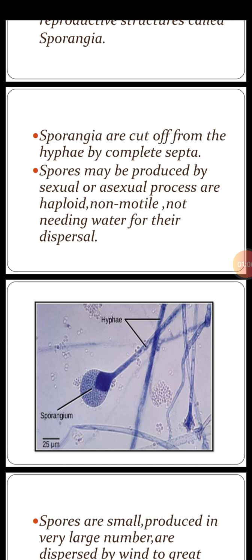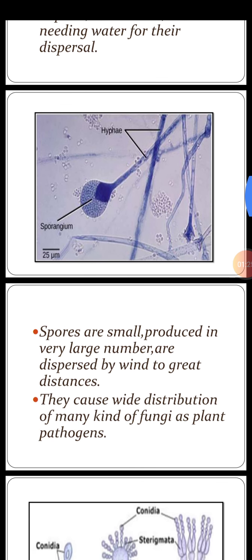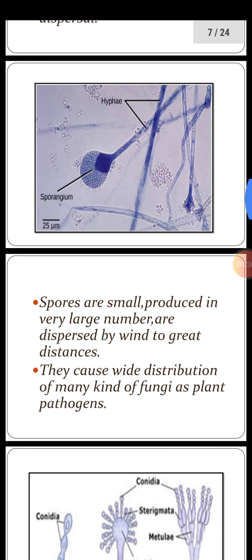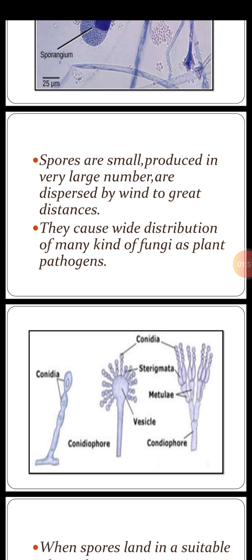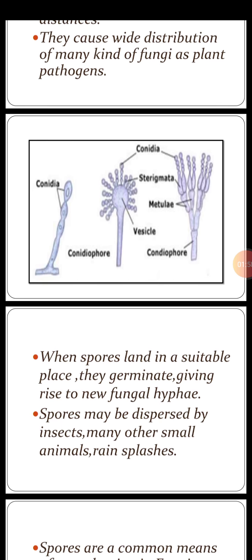Sporangia are cut off from the hyphae — thread-like structures — by separations called complete septa. Spores may be produced by sexual or asexual processes. They are haploid, non-motile, and do not need water for their dispersal. Spores are small, produced in very large numbers, and dispersed by wind to great distances, causing wide distribution of many kinds of fungi and spreading diseases in plants, so they are called plant pathogens.